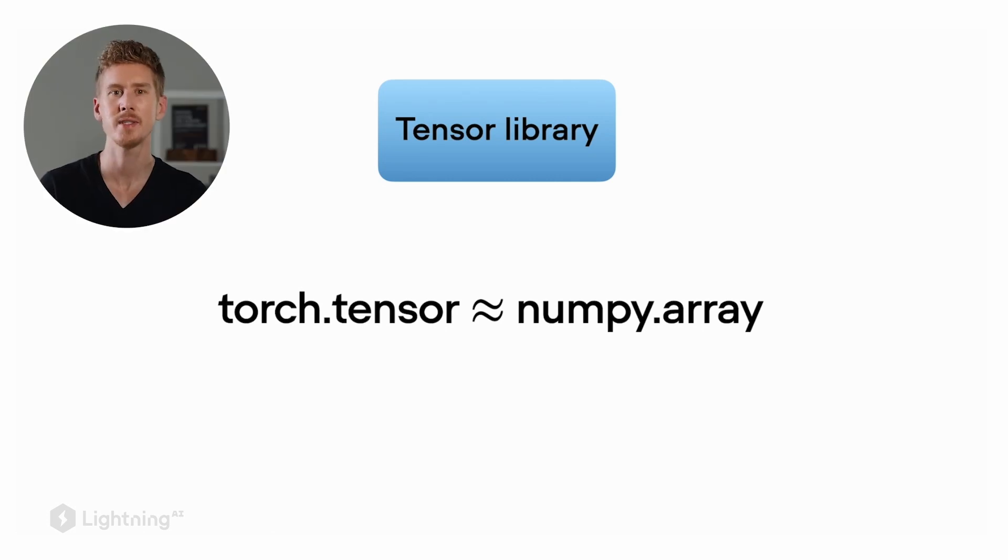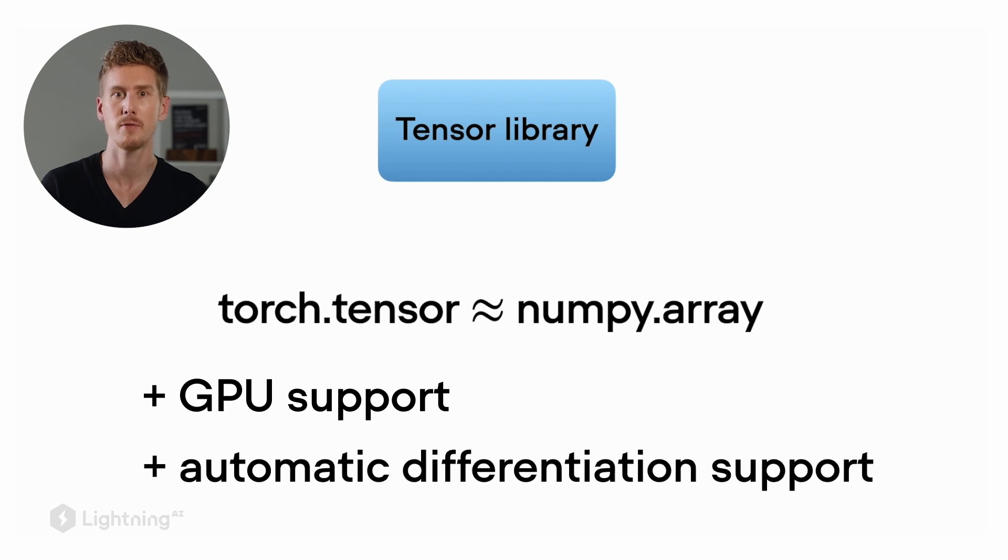The main difference though is that torch.tensor supports GPU computation. And there's also the automatic differentiation support, which will become very useful when we train neural networks later.